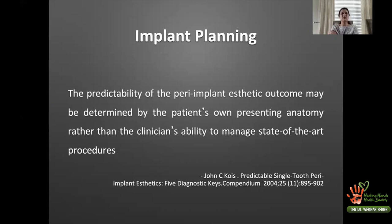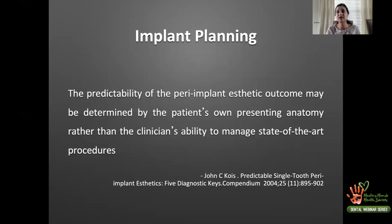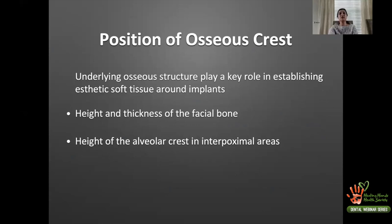Never overestimate or oversell yourself, because sometimes the results are very hard to achieve. It is the patient's presenting anatomy that predicts how successful you will be. The underlying osseous structure plays a key role in establishing aesthetic soft tissue around implants — the height and thickness of the facial bone, and the height of the alveolar crest interproximally, are both critical factors.